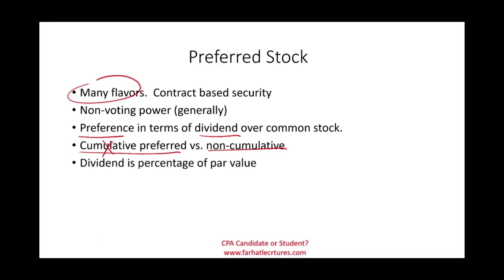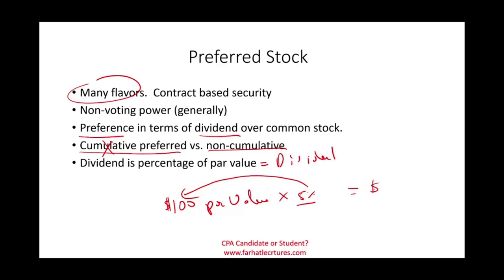Dividends are stated as a percentage of par value — this is called the dividend rate. For example, preferred stock with a $100 par value at 8% means the dividend per share is $8. So the dividend amount is 8% of $100 = $8 per preferred share. Sometimes dividends are stated as a dollar amount per share, but most of the time it's a percentage of par value.